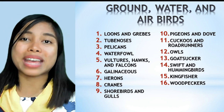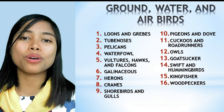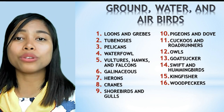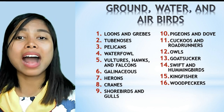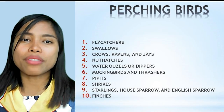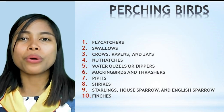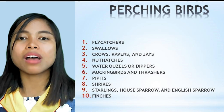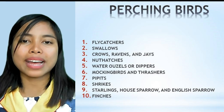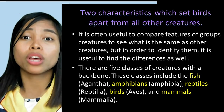Ground, water, and air birds include loons, grebes, tube-noses, pelicans, waterfowl, vultures, hawks and falcons, gallinaceous birds, herons, cranes, shorebirds and gulls, pigeons and doves, cuckoos and roadrunners, owls, goatsuckers, swifts and hummingbirds, kingfishers, and woodpeckers. Perching birds include flycatchers, swallows, crows, ravens and jays, nuthatches, water ouzels, mockingbirds and thrushes, pipits, starlings, house sparrows, and finches.